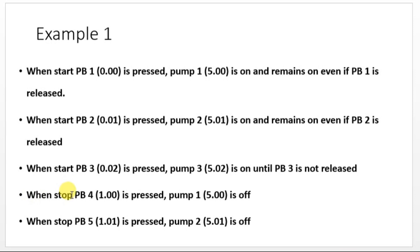The next statement: when start push button 4 is pressed, pump 1 should turn off — so we have turned on pump 1 in the first statement, and now it has to be off when PB4 is pressed. Then when PB5 is pressed, pump 2 is off.